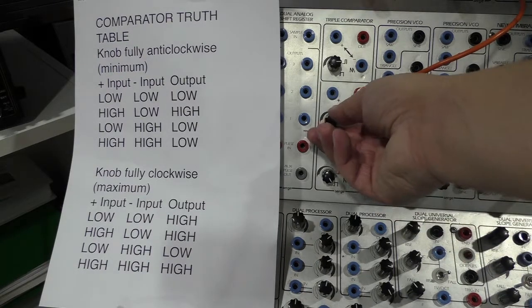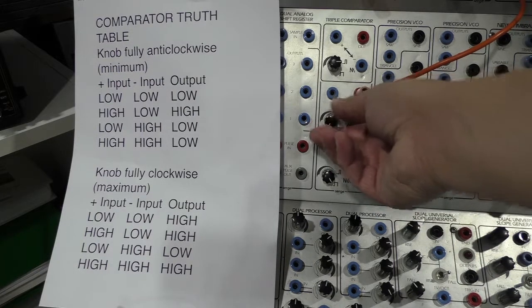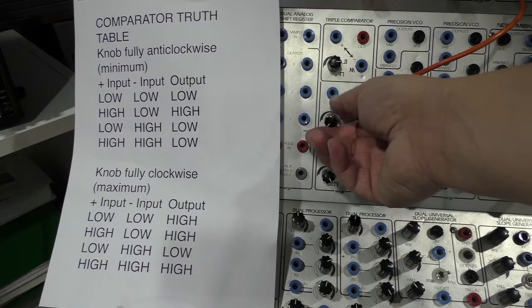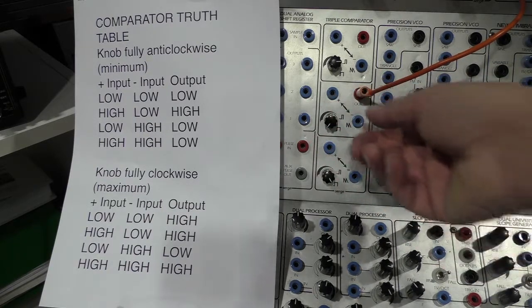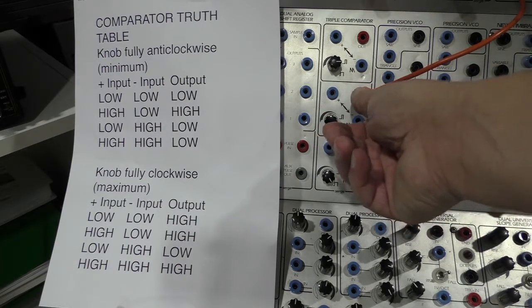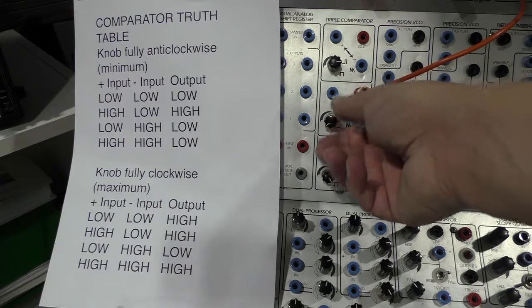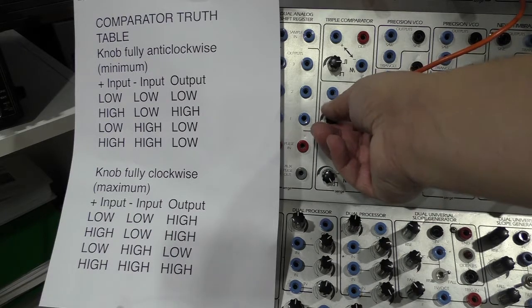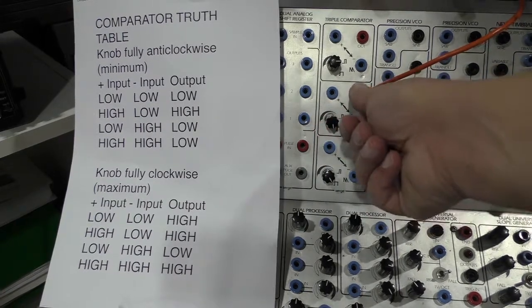With the comparator knob in its fully anti-clockwise position, the pitch is low, the output pitch is low, and the output level on the output of the comparator is low. If we turn this to the fully clockwise position, then it goes high.